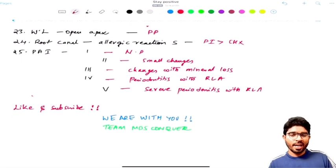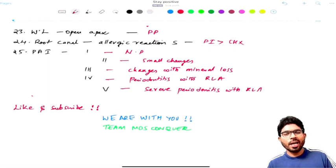25 PAI index - periapical index, which is taken on the radiograph. So grade 1 is a normal periapical area. Grade 2 is smaller changes. Grade 3 is changes with mineral loss. Grade 4 is periodontitis with radiolucent areas. Grade 5 is severe periodontitis with radiolucent areas.